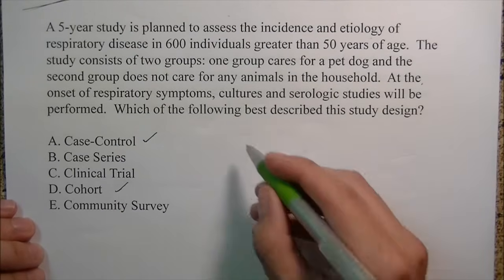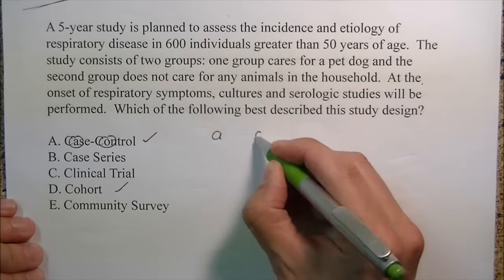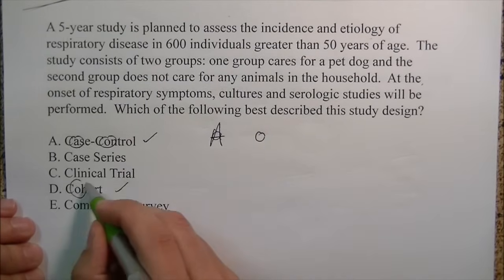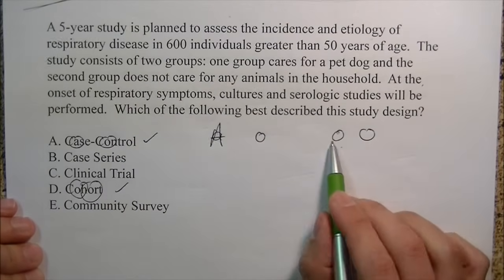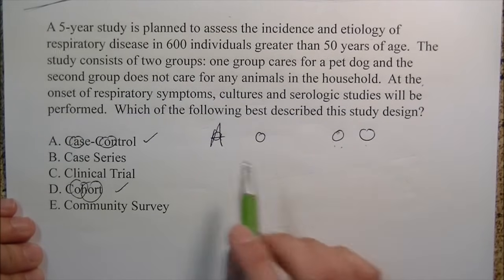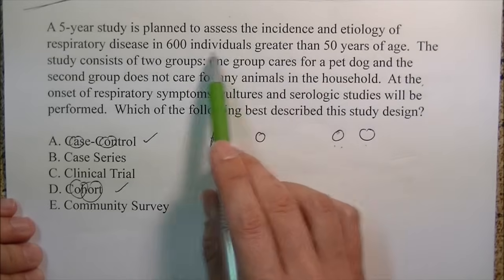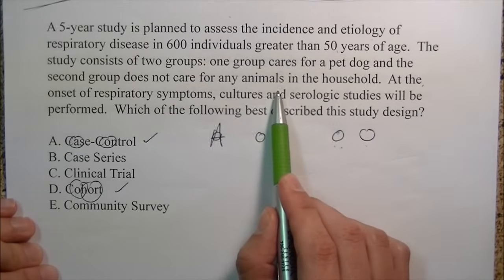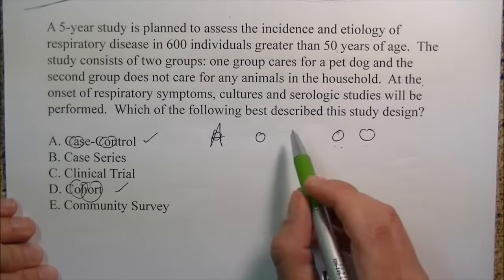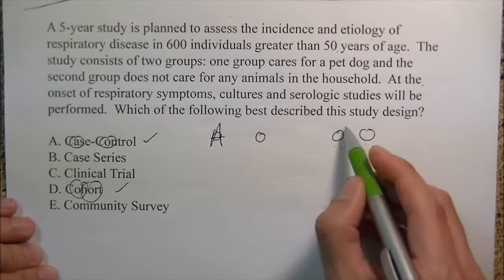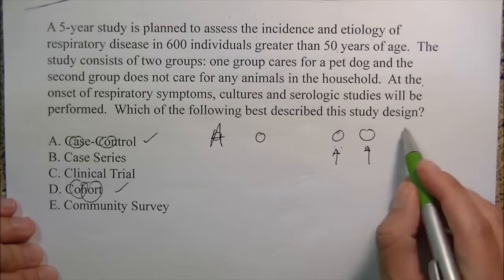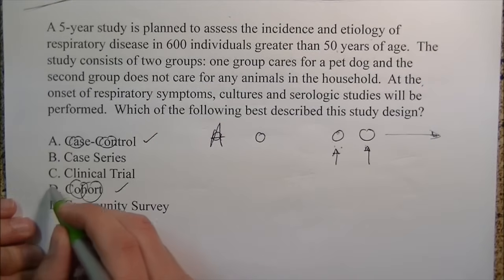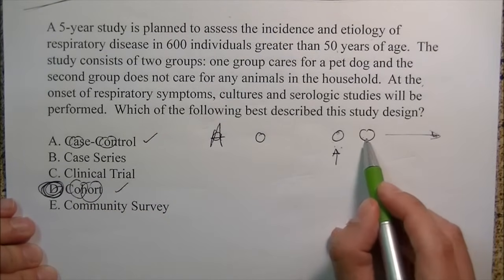Remember: case control has an A and an O — meaning one person has a disease and one does not. Cohort has an O and an O — both sets of people start out without the disease. In this problem, both the 50-year-olds do not have the disease at the onset; they're looking for it to happen in the future given these circumstances. So this is a cohort study — nobody has the disease initially.